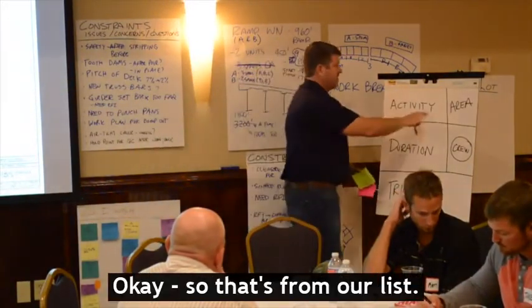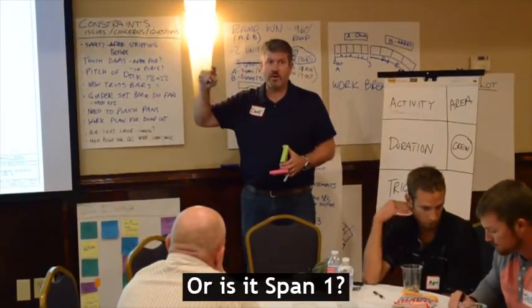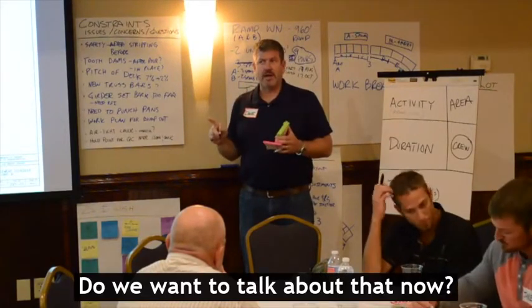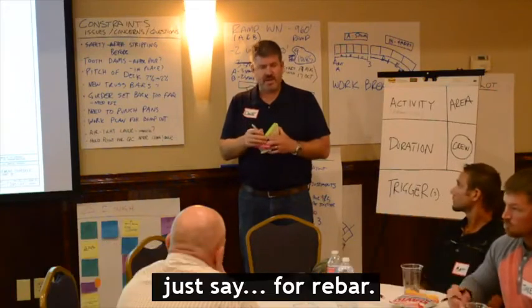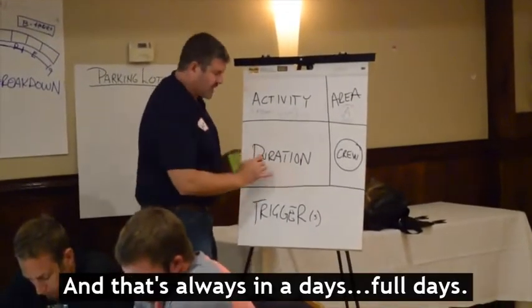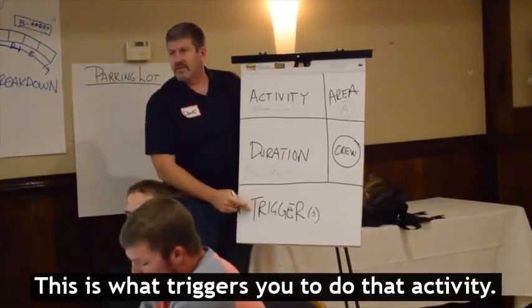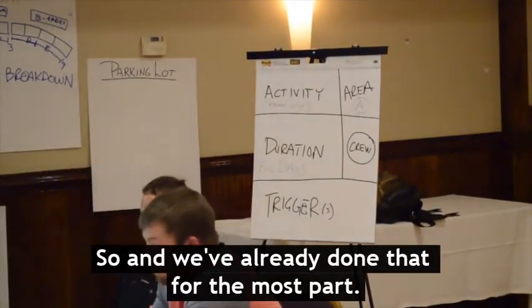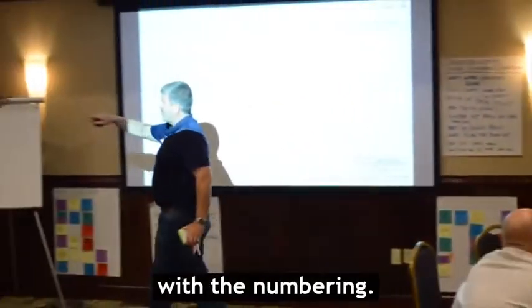That's your activity — from span one, span A, span B. What are the areas going to be when we break this down as far as durations, just say for rebar? This block here is going to be your duration, always in days. This is the important one — this is the trigger. This is what triggers you to do that activity. The primary trigger is over here with the numbering. So if we pick any activity, say it's number ten, install runoffs — the trigger to do the runoffs is the predecessor.